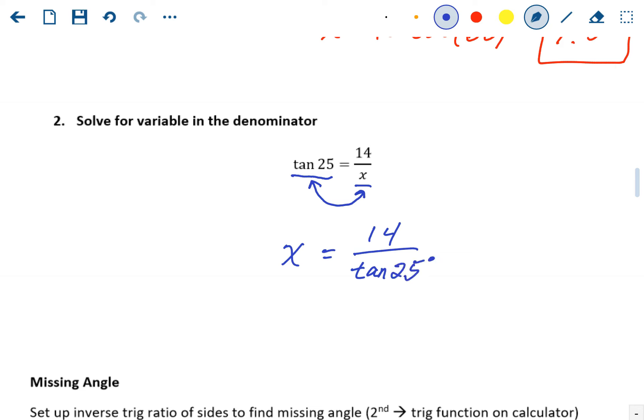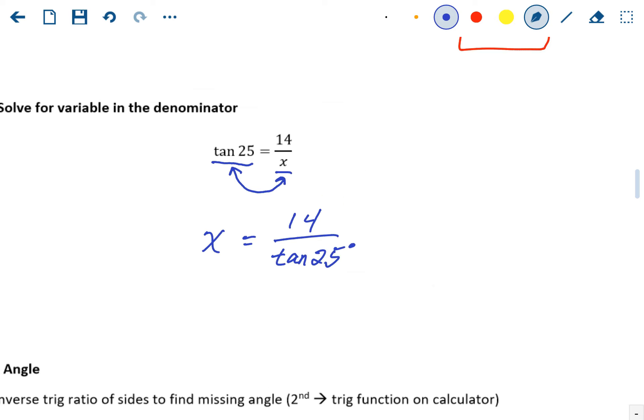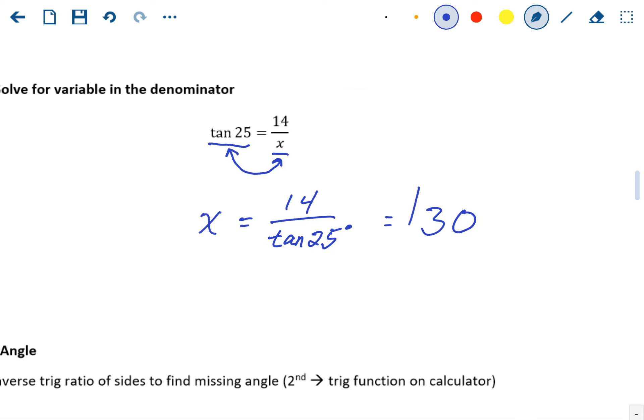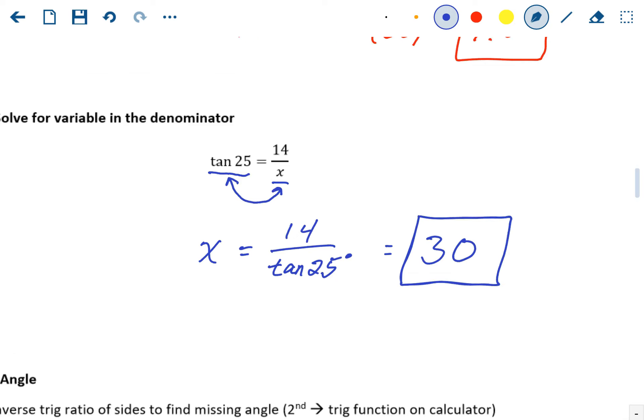Now again, that only works when the variable is in the denominator. Really what's happening algebraically is we're multiplying both sides by x to get rid of the fraction and then we're dividing by tangent of 25. But since it always works like this, you could just think of it as swapping those two positions. Just punch it into the calculator. 14 divided by tan of 25 is 30. That's a side length, not an angle. So the length of the missing side of the triangle is 30.